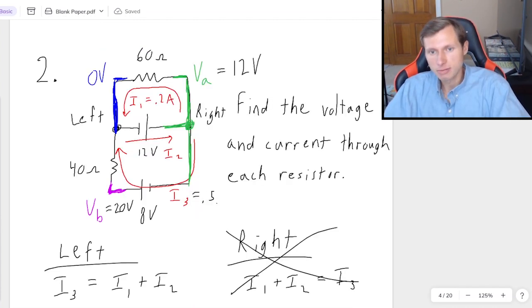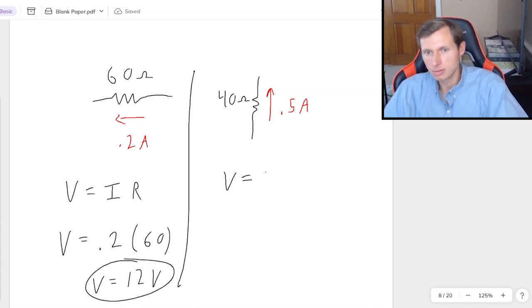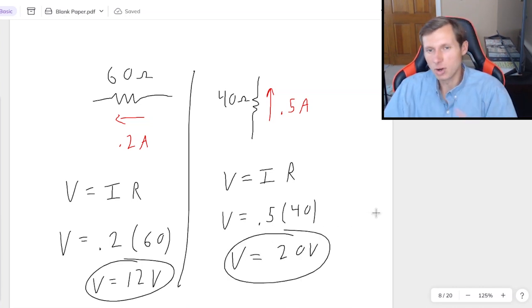So then if I3 is 0.5 amps, it means I have everything I need to answer the question, which remember was find the voltage and the current through each resistor. For 60 ohm, that was 0.2 amps. For the 40 ohm, that's 0.5 amps. And now I just need to find their voltages. And now there's a couple ways I can find these voltages. I'll just use Ohm's law because that's probably the easiest for you to understand. So voltage equals current 0.2 times resistance, 60. That's going to be 12 volts for the 60 ohm resistor. And then for the 40 ohm, V equals I times R, voltage equals 0.5 times 40, which is going to be a voltage of 20 volts. And there we have all the currents and all the voltages that we wanted for this circuit. And we're done.